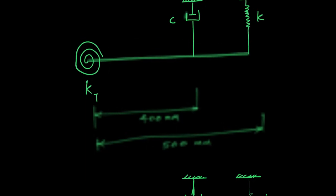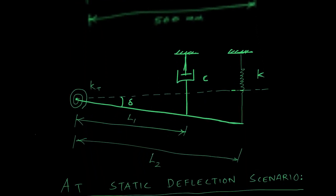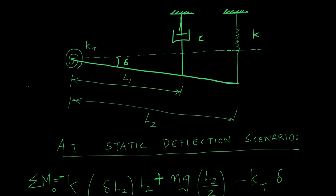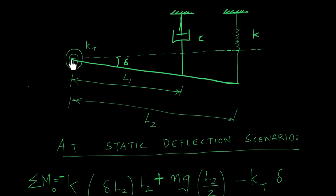Before computing the natural frequency, we need to define the equilibrium position first, then define a coordinate system from there. Here I've shown the static deflection configuration — this is an exaggerated picture where Delta, the angle by which the whole system gets deflected, is exaggerated. Delta will be very small. This is the static condition, and taking moments about this particular point should give zero.